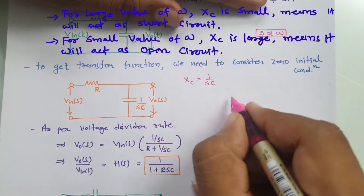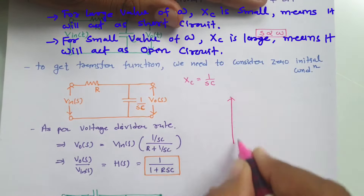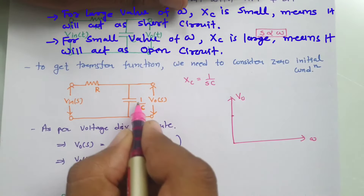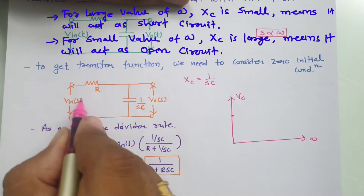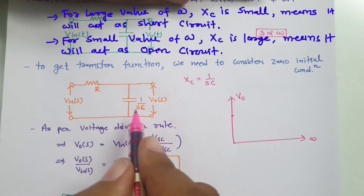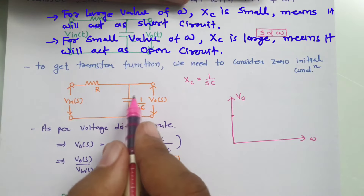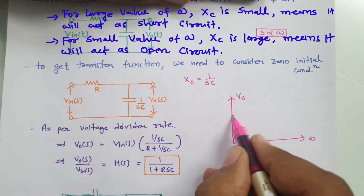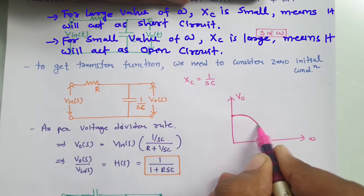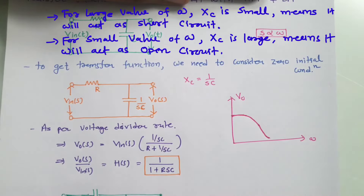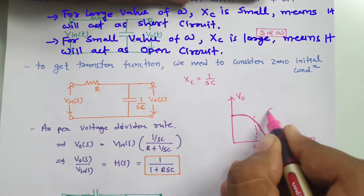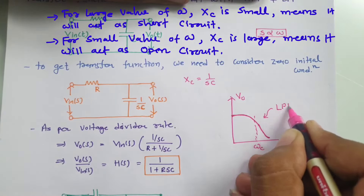Looking at the frequency response graph: on the horizontal axis is frequency and on the vertical axis is output voltage. For lower frequency, the impedance is larger, so the input appears at the output. When you increase frequency, Xc gets smaller and the capacitor short-circuits, so the output has lower amplitude. The output voltage decreases with increasing frequency, and the cutoff frequency is omega_C. This is the response of a low pass filter.